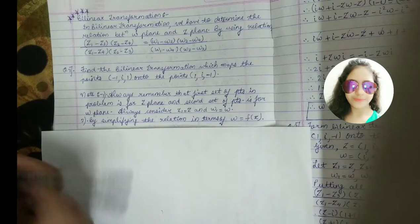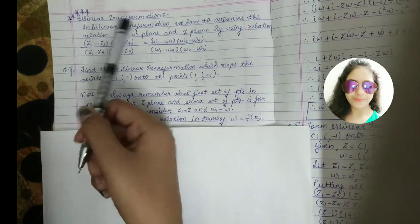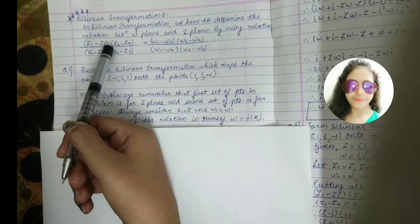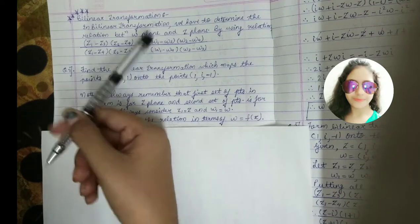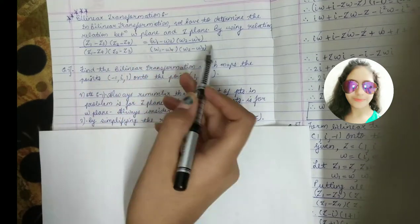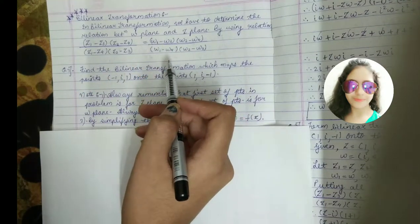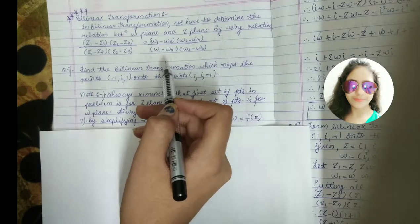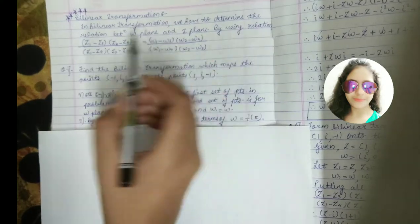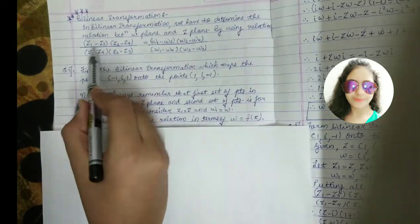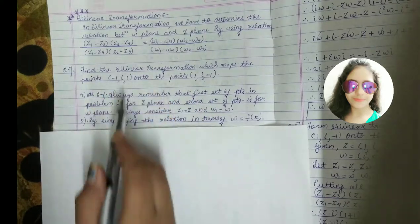As it is written here, in bilinear transformation we have to determine the relation between the omega plane and the z plane. We have to determine the relation in this transformation — omega plane and z plane — using these relations.